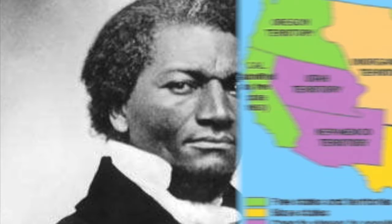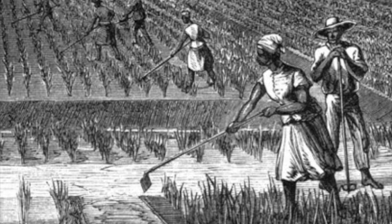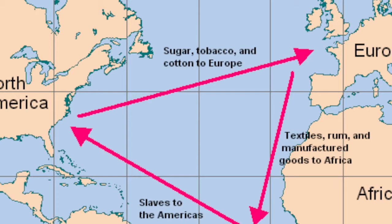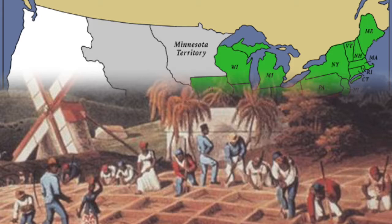The reasons for the development of the plantation system, the transatlantic slave trade, and the spread of slavery: the plantation system was used for slaves to work on crops; the transatlantic slave trade was created so enslaved African people could be transported from Africa to the Americas; and the spread of slavery was developed because the southern climate and geography kept slavery going.